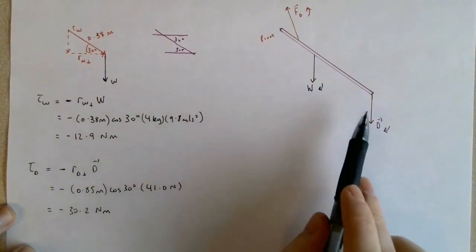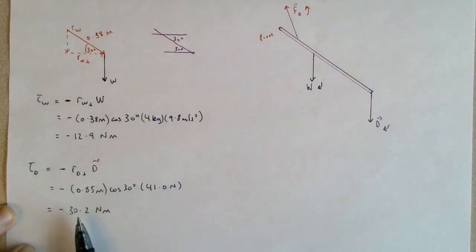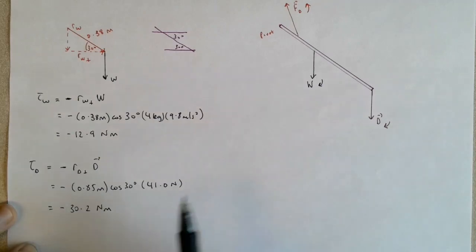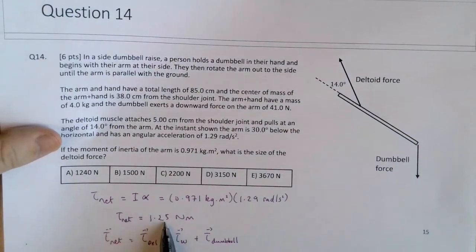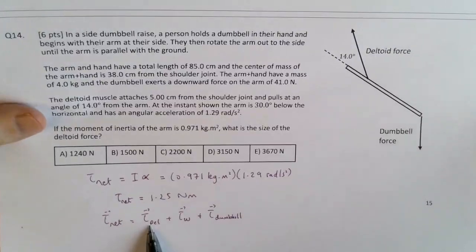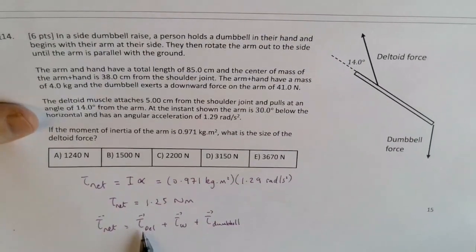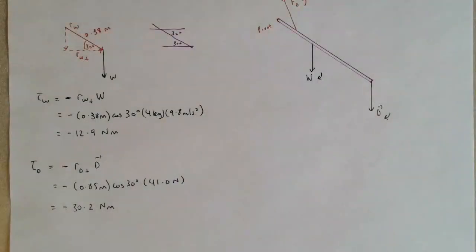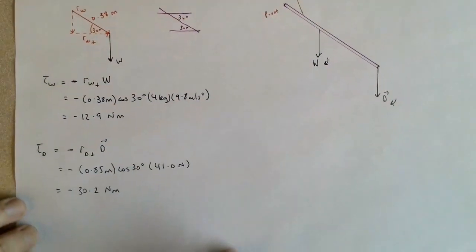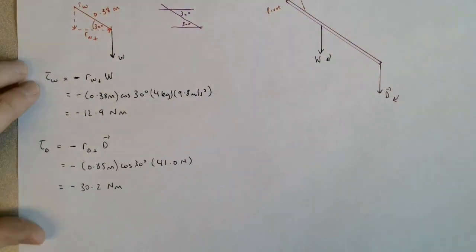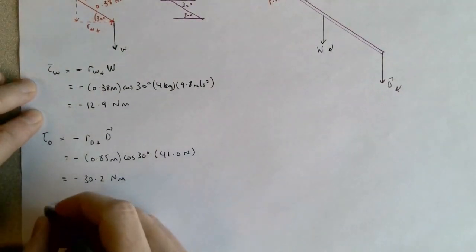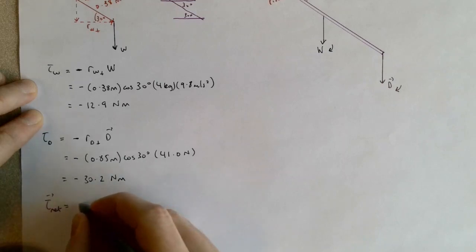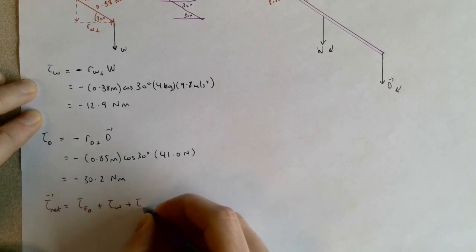So we found the two torques due to these two forces, which are largely negative. And I know that the net torque on the previous page I solved for was 1.25 Newton meters. So this is what I'm going to try to solve now for the torque of the deltoid.